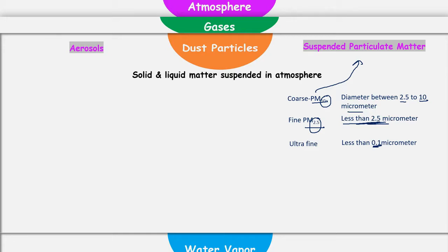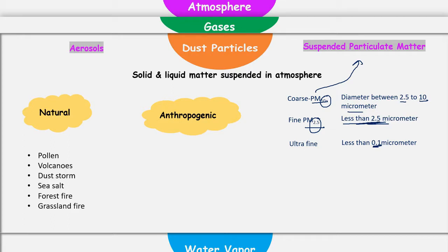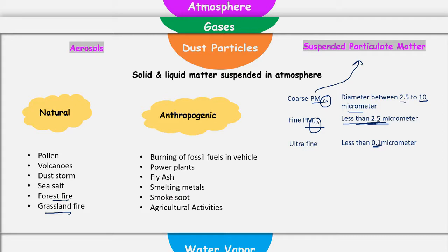Now the question comes: how does the atmosphere get these dust particles? There can be two sources — one is natural, one is anthropogenic. Natural dust particles can come from pollens, volcanic eruption, dust storms, sea salt, forest fires, and grassland fires. Anthropogenic dust particles can come from burning of fossil fuels in vehicles, in power plants, fly ash, smelting metals, smoke soot, and agricultural activities.